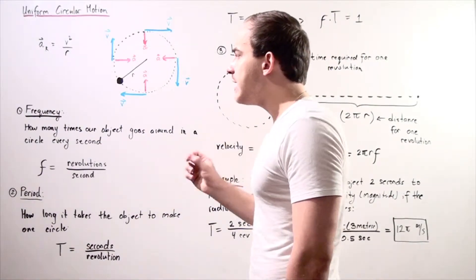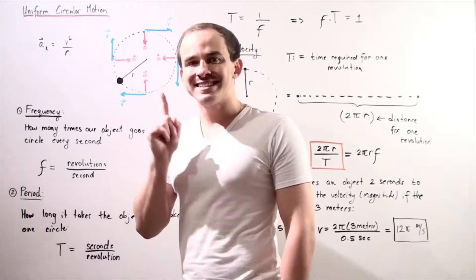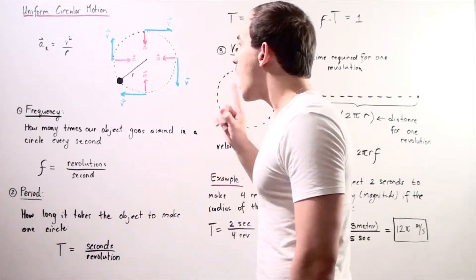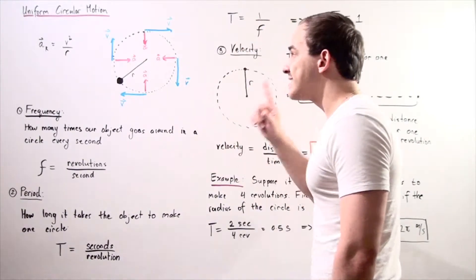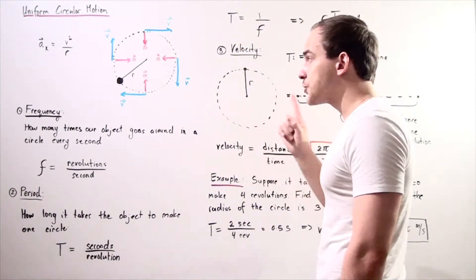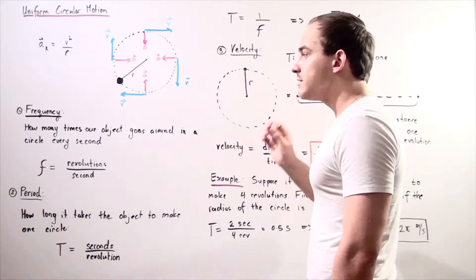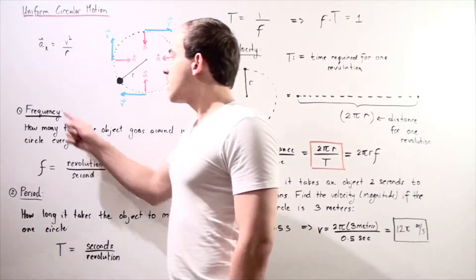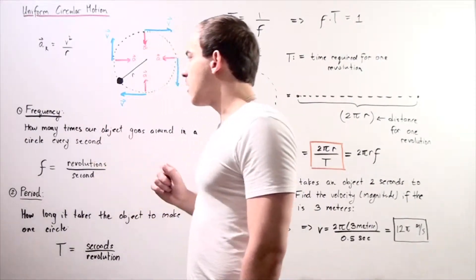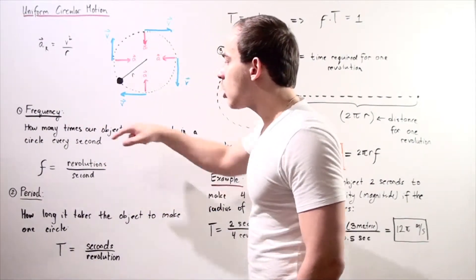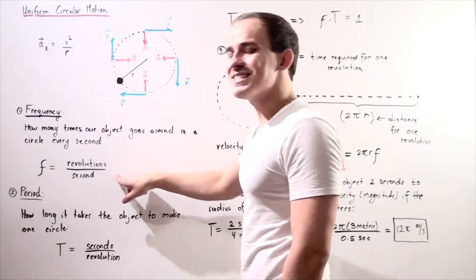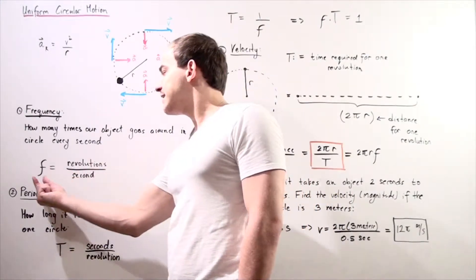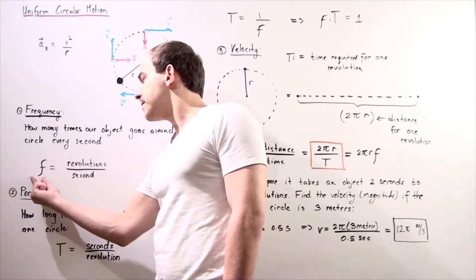For example, if our frequency is 10, that means our object makes 10 full circles every single second. The units of frequency are revolutions per second.